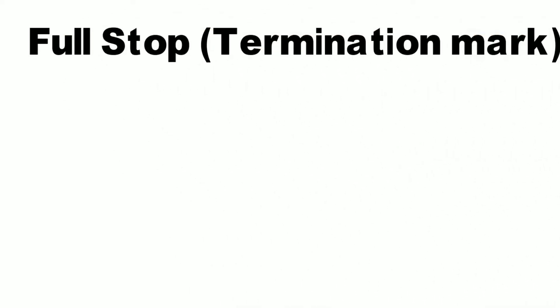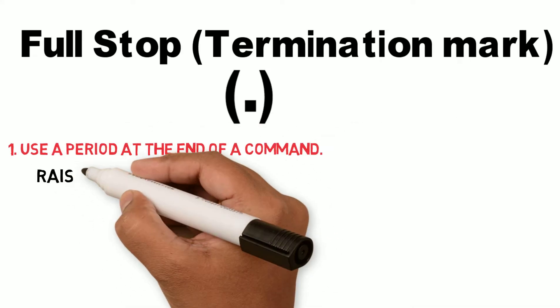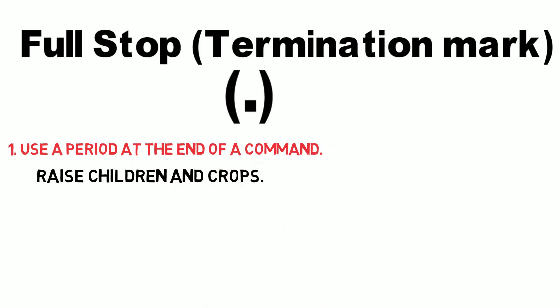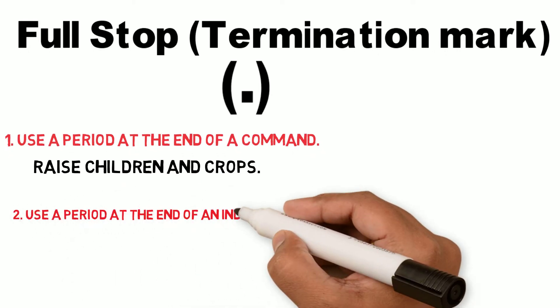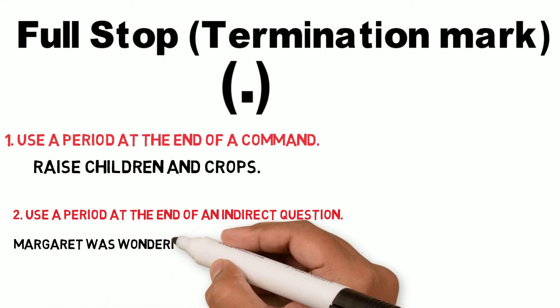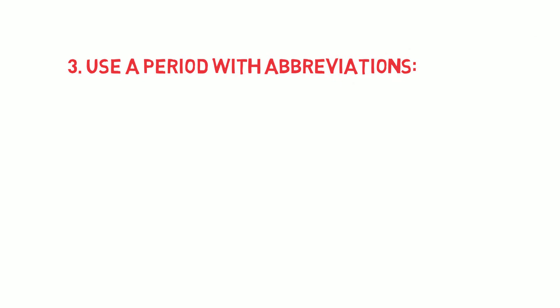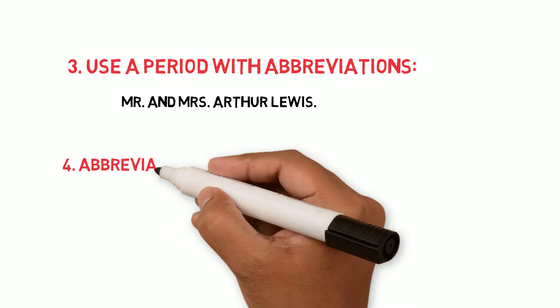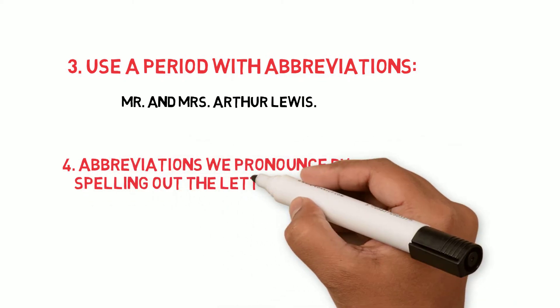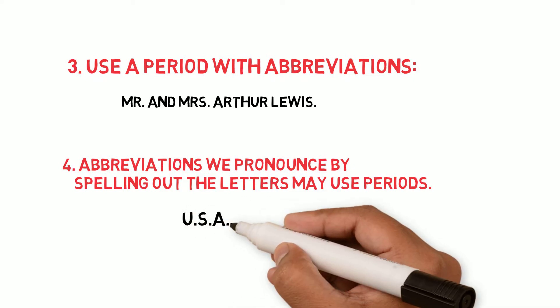Full stop. Use a period at the end of a command. For example, raise children and crops. Use a period at the end of an indirect question. For example, Margaret was wondering what she could do to help. Use a period with abbreviations. For example, Mr. and Mrs. Arthur Lovace. Abbreviations we pronounce by spelling out the letters may use periods. For example, USA.